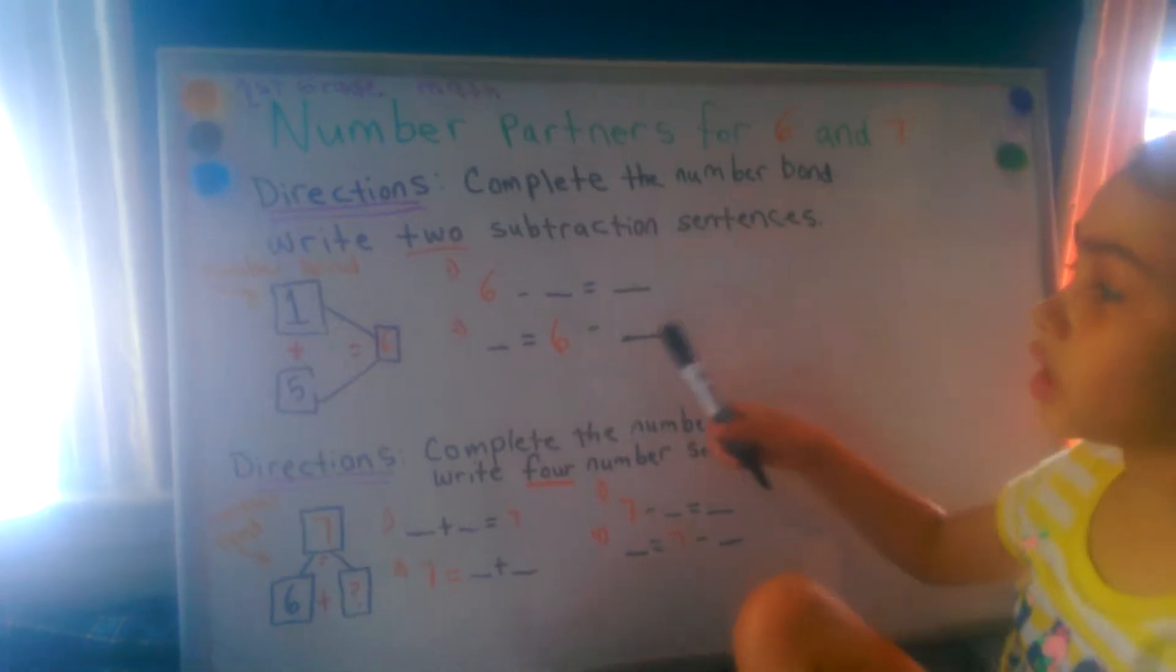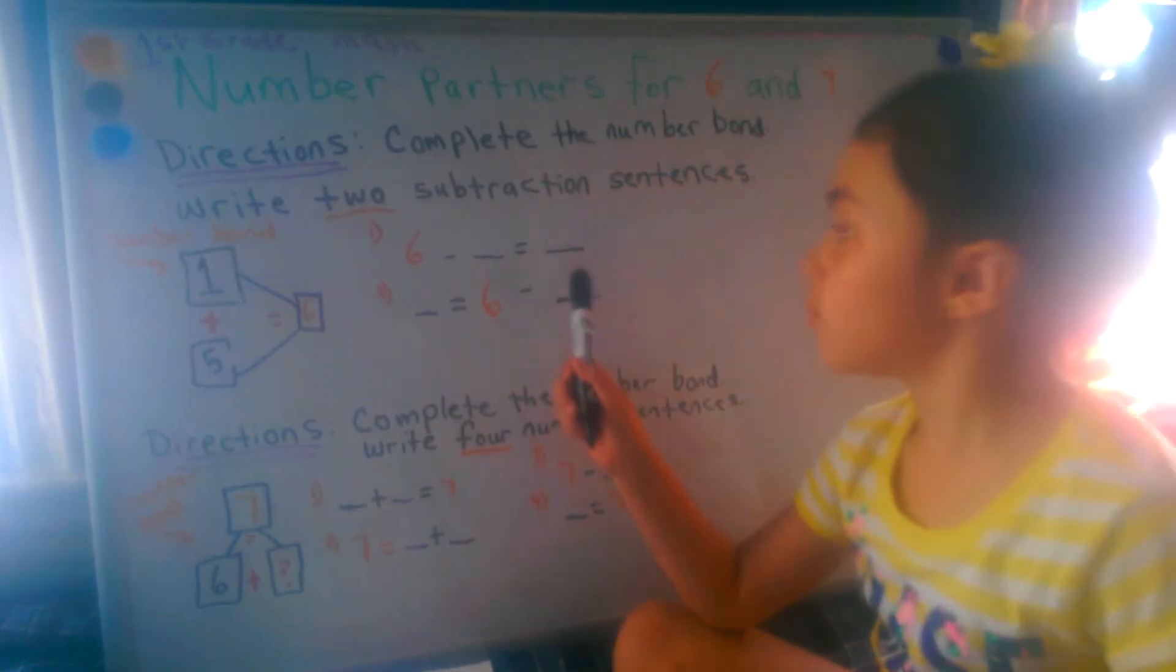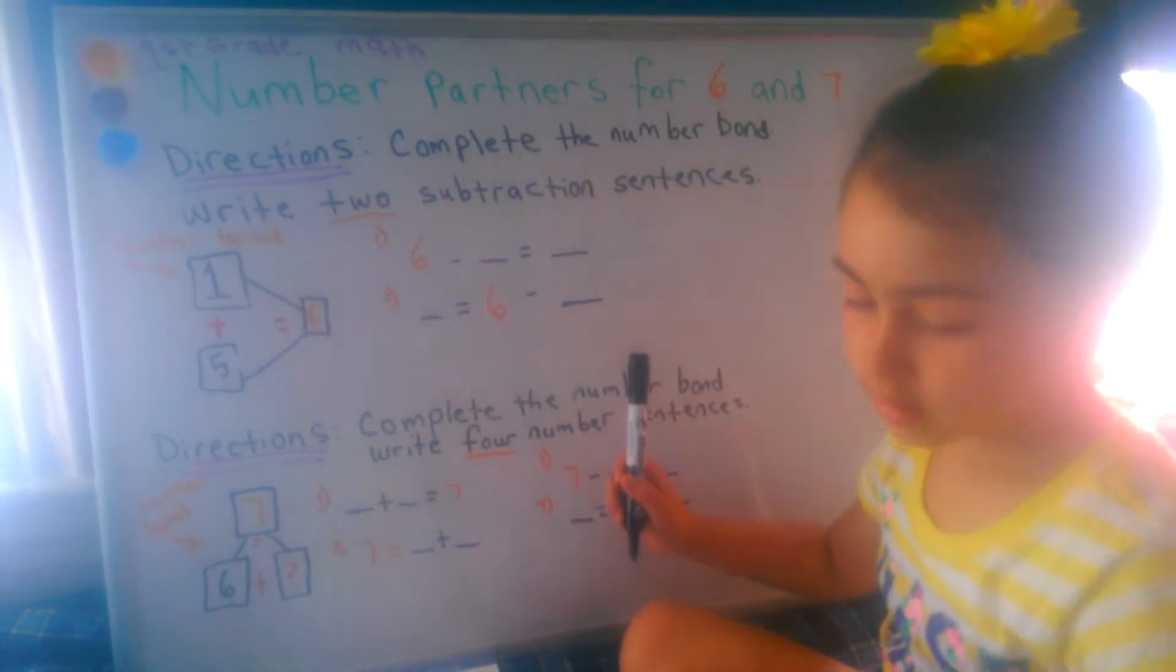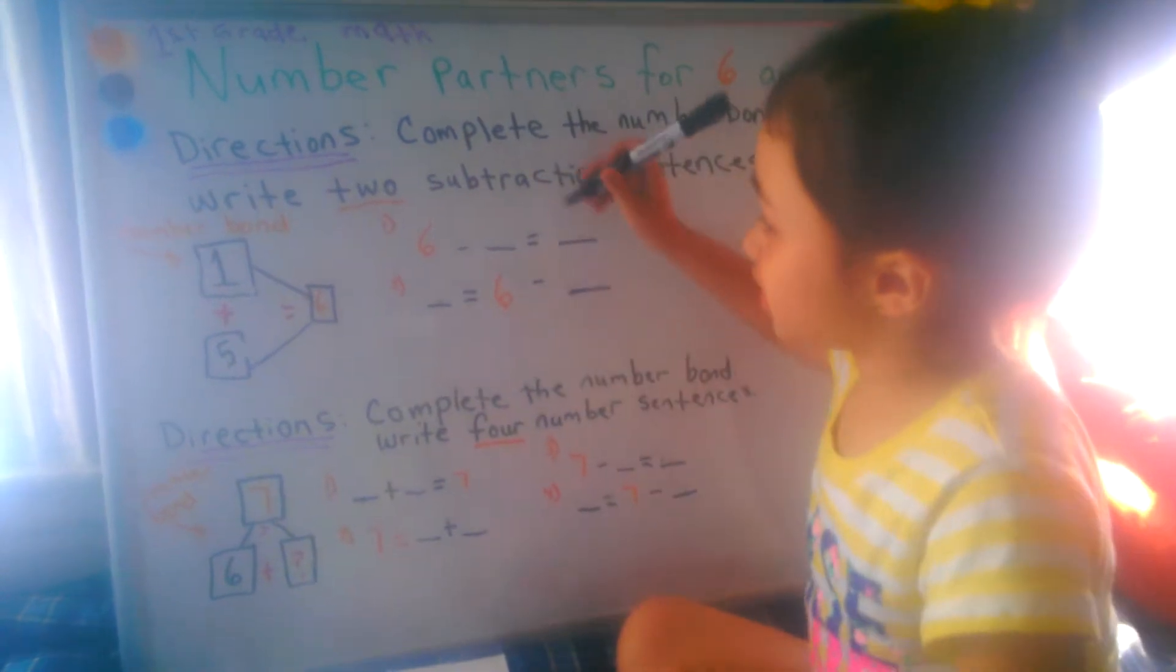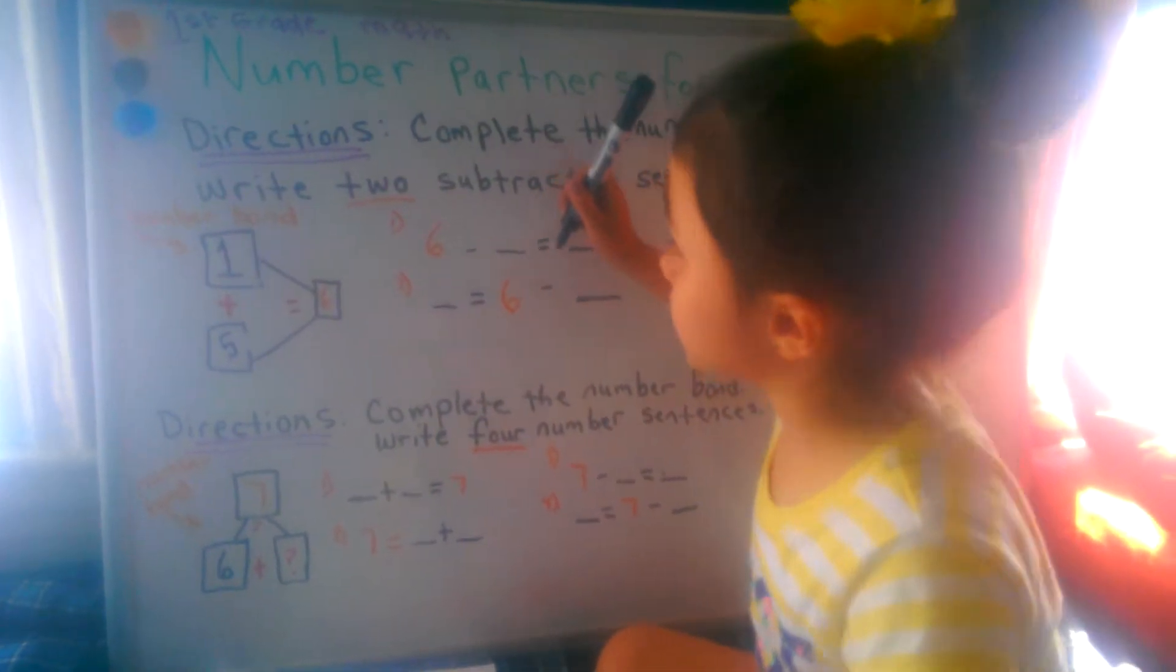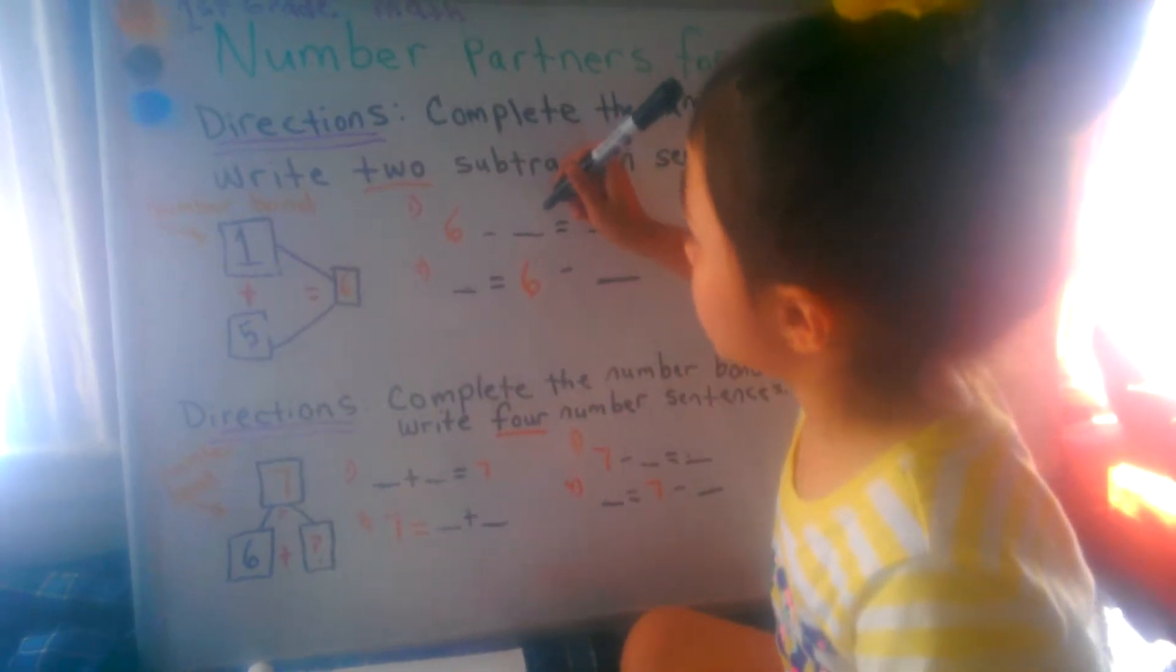And then we come here. Six take away what equals what? Go ahead. Six take away one equals five.